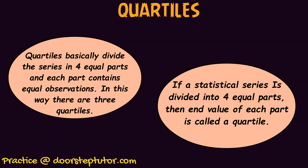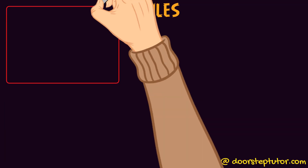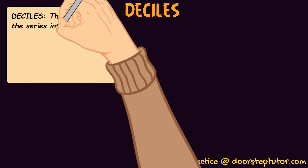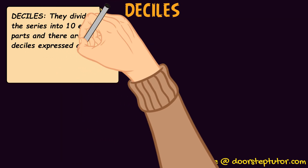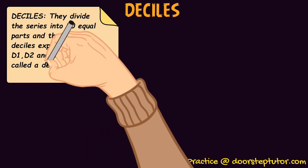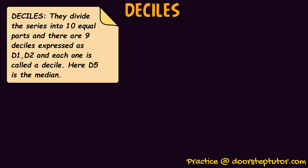Deciles divide the series into ten equal parts and there are nine deciles — this can be asked in an exam. They are expressed as D1, D2, and so on. D5 is the median in case of deciles, so remember that. Deciles divide the observations into ten equal parts.